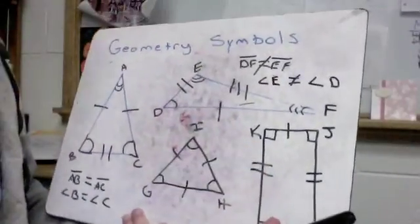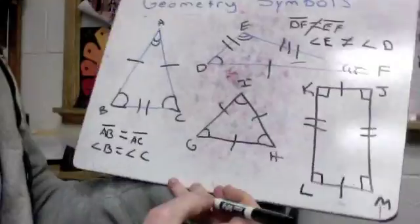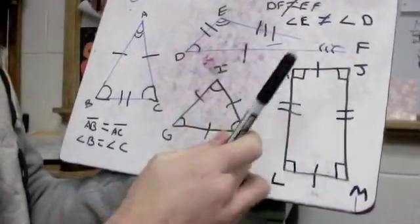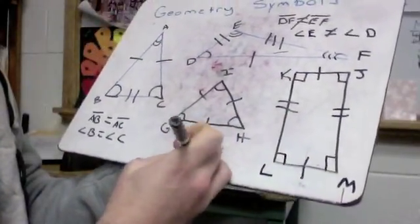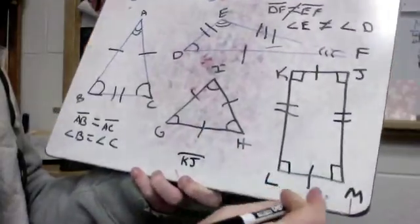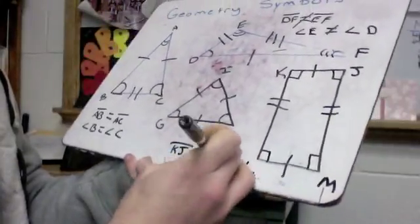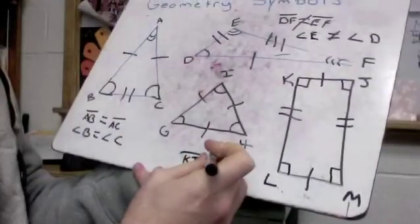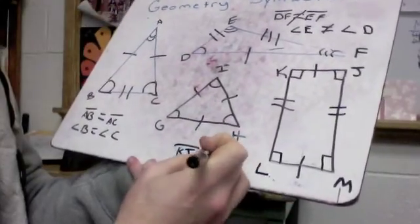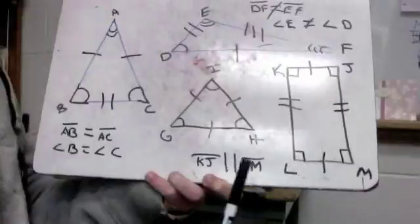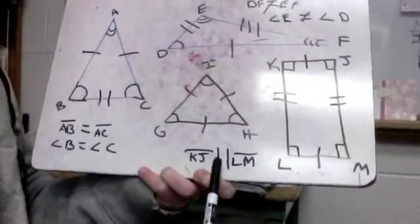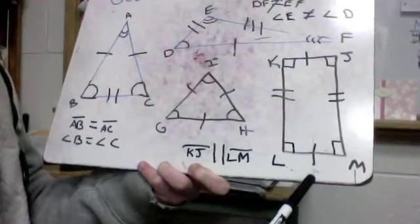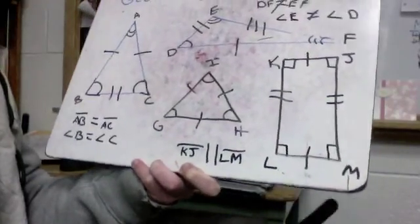The parallel and perpendicular symbols might also be something you see. So if we take segment KJ and we take segment LM, those are equal lengths — we could show that. But we could also use those two vertical lines, which means parallel. We could say KJ is parallel to LM.